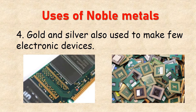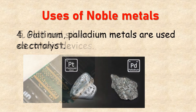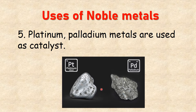Gold and silver are also used to make some electronic devices. Platinum and palladium metals are used as catalysts. A catalyst is a substance which increases the rate of reaction without taking part in the reaction — they do not themselves participate, but due to their presence the reaction rate increases.